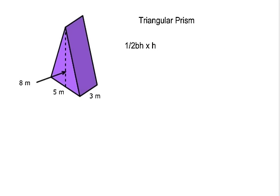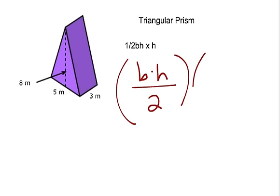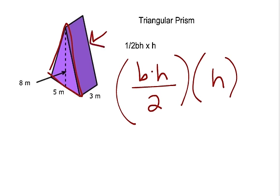This is a triangular prism, and the formula is one-half base times height — or to make it easier, base times height divided by two — and then multiply all of that by the height of the prism. The reason we do base times height divided by two is because the base of this prism is a triangle, and the triangle goes all the way over to the other triangle on that side, so there are two parallel triangles.